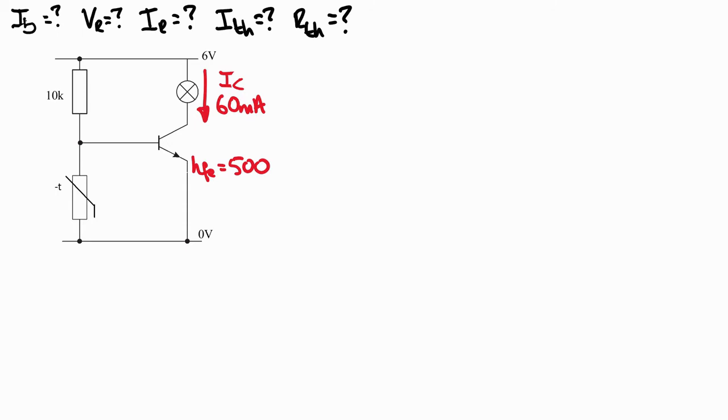So we can start off by calculating what the base current would be by rearranging the formula for current gain. Base current is the collector current divided by the gain, so 60 divided by 500, which is 0.12 milliamps or 0.0012 amps, and that's our first part dealt with.